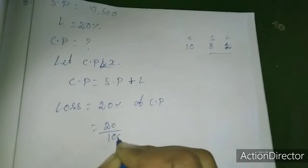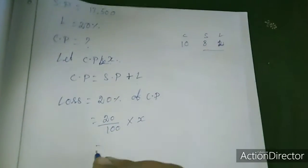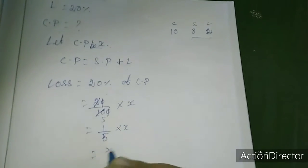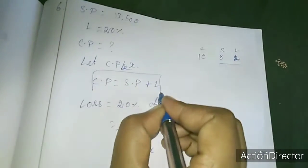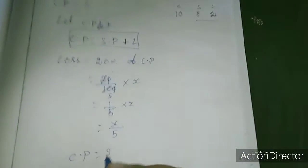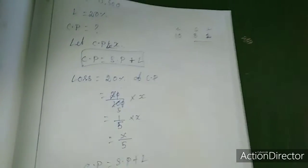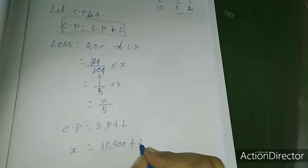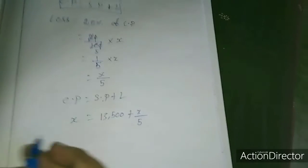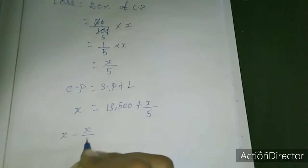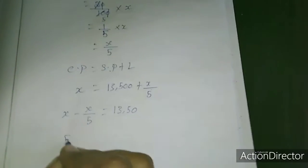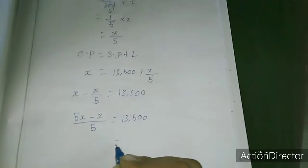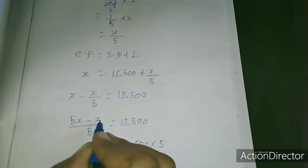Rearranging: x minus x/5 equals 13,500. Multiplying through: 5x minus x divided by 5 equals 13,500. This gives 4x divided by 5 equals 13,500, so 4x equals 13,500 into 5.